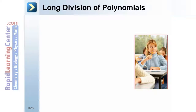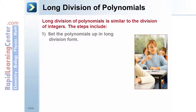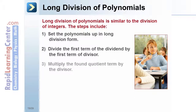Long division of polynomials is similar to the division of integers. The steps include: 1. Set the polynomials up in long division form. 2. Divide the first term of the dividend by the first term of the divisor. 3. Multiply the found quotient term by the divisor.